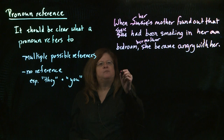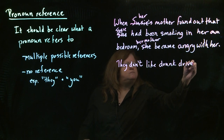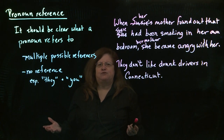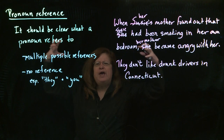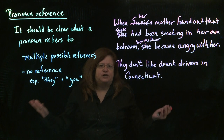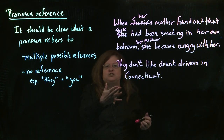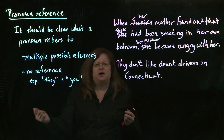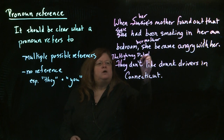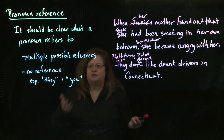For example, I'll see a sentence like this: 'They don't like drunk drivers in Connecticut.' In this case, we haven't the foggiest notion who 'they' is — it's some vague entity. Is 'they' the entire population of Connecticut, the Connecticut Highway Patrol, or the traffic court judges? What does 'they' refer to? So you have to think: who am I referring to by 'they'? Maybe it's the Highway Patrol — and since 'Highway Patrol' is singular, it would be 'doesn't' rather than 'don't': 'The Highway Patrol doesn't like drunk drivers in Connecticut.' Now we've clarified.